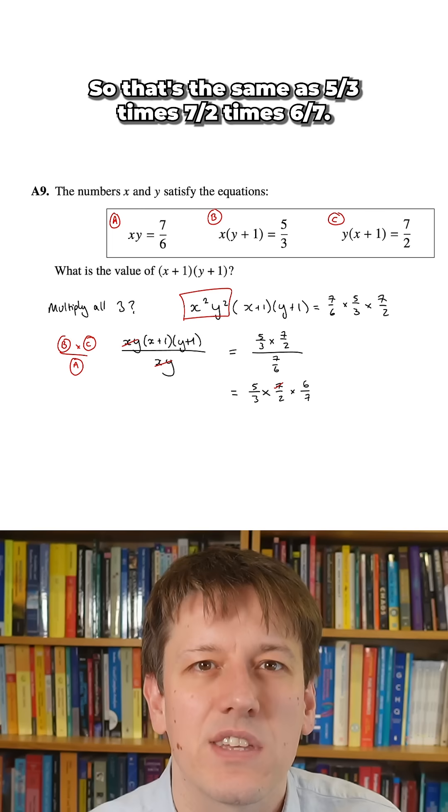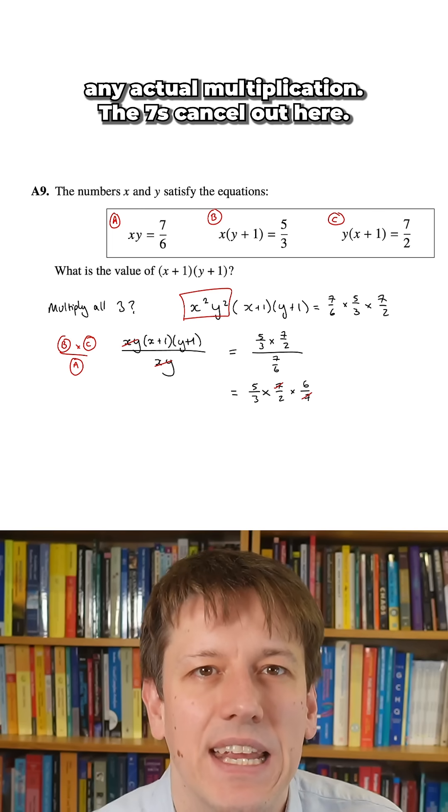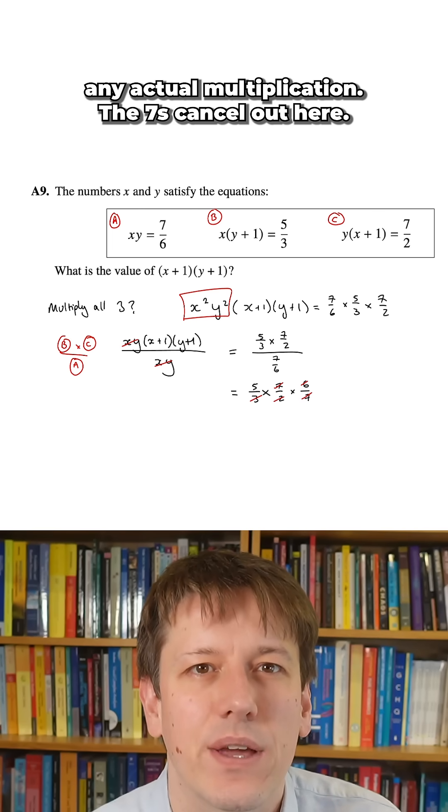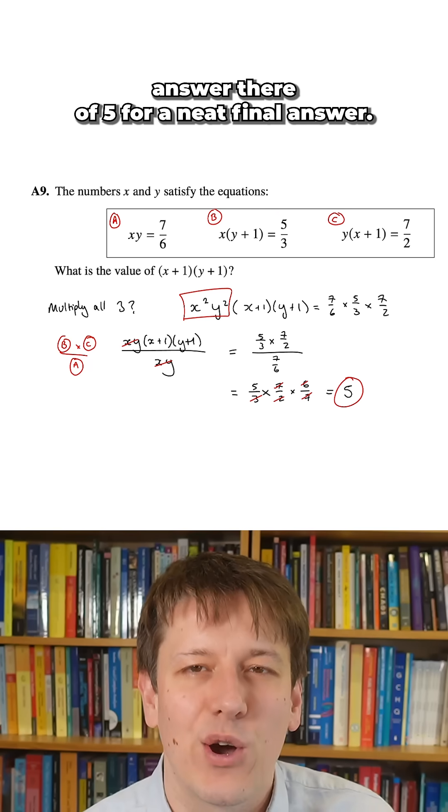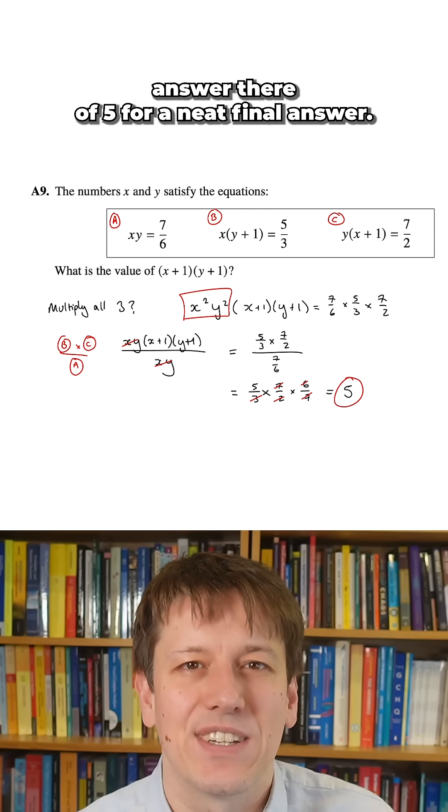And we can do this without even doing any actual multiplication. The sevens cancel out, and the three and two cancel with the six, so we're left with a final answer of five.